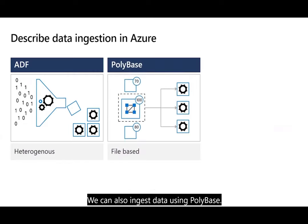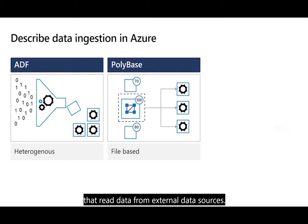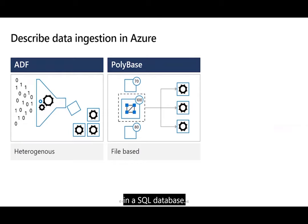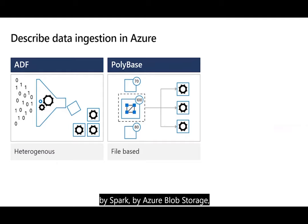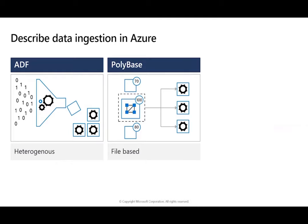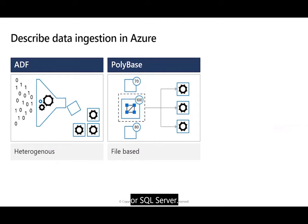We can also ingest data using Polybase. Polybase is a feature of SQL Server and Azure Synapse Analytics that enables you to run T-SQL queries that read data from external data sources, making those external data sources appear like tables in a SQL database. Using Polybase, you can read data managed by Hadoop, Spark, Azure Blob Storage, and other database systems like Cosmos DB, Oracle, Teradata, and MongoDB. Polybase also enables you to transfer data from an external data source into a table, copy data into Azure Synapse Analytics or SQL Server, and run queries that join tables in a SQL database with external data — enabling analytics that span multiple data sources.